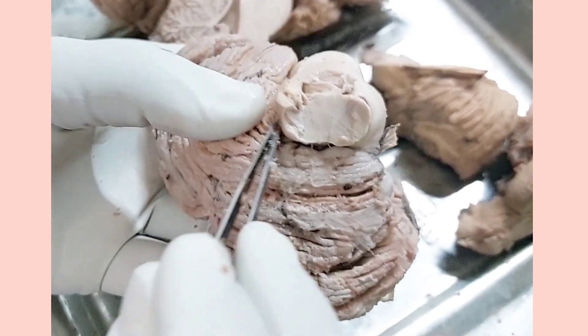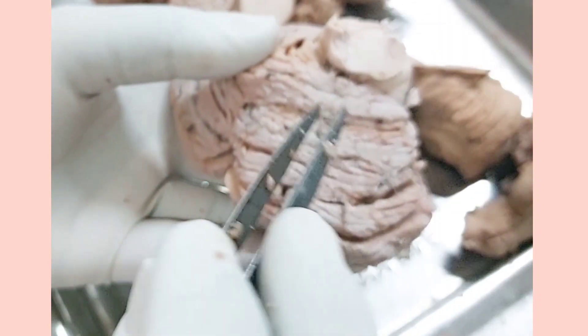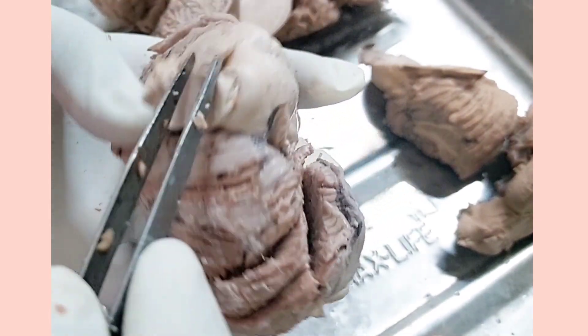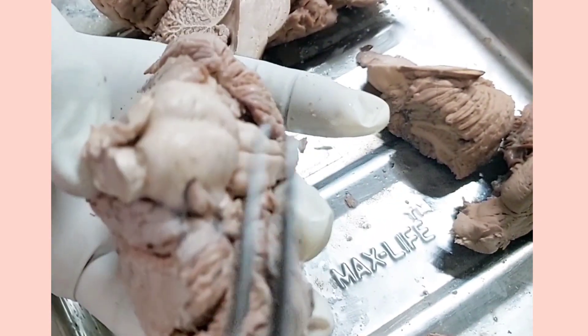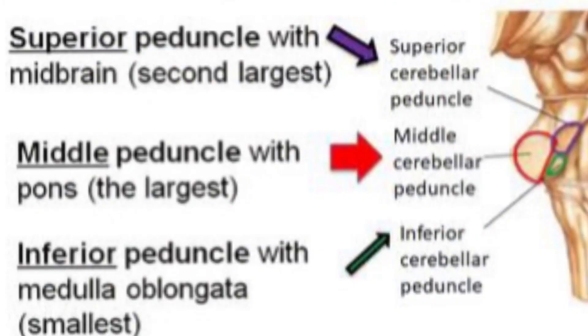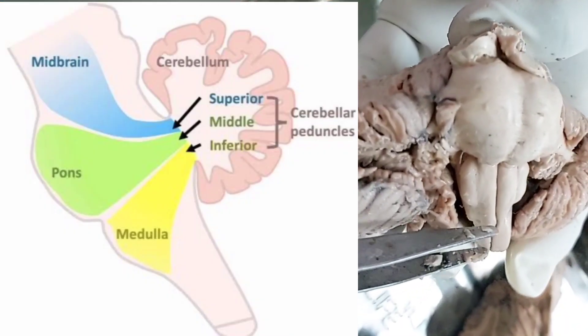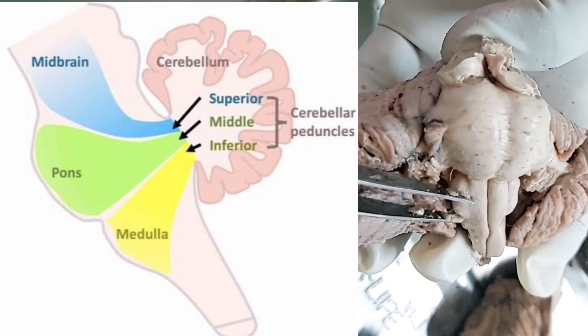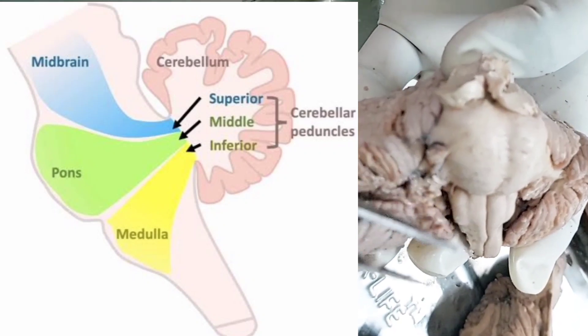The cerebellum is separated from the pons and medulla by the fourth ventricle. The cerebellum is connected to all three parts of the brainstem: to the midbrain by the superior cerebellar peduncle, to the pons by the middle cerebellar peduncle, and to the medulla by the inferior cerebellar peduncle.